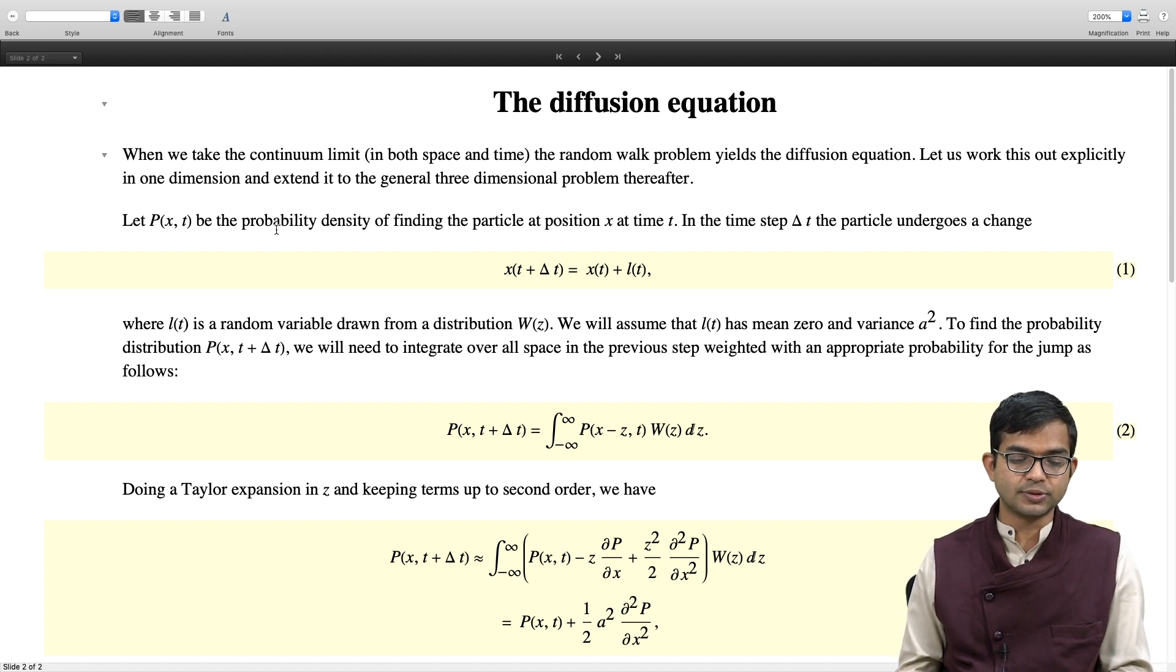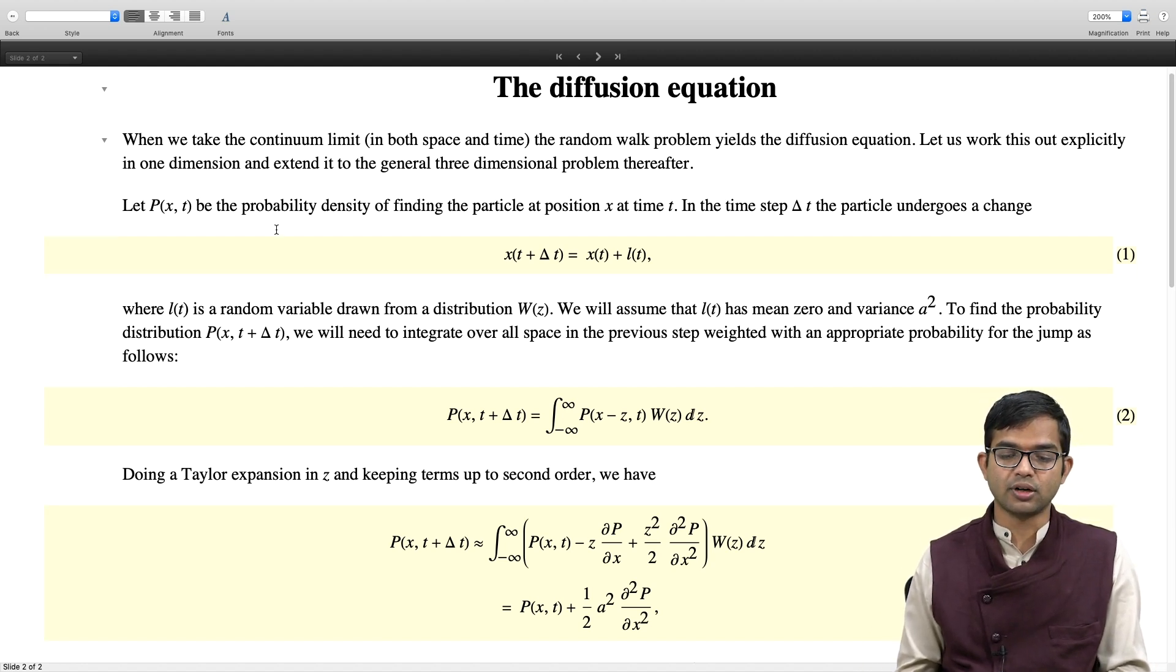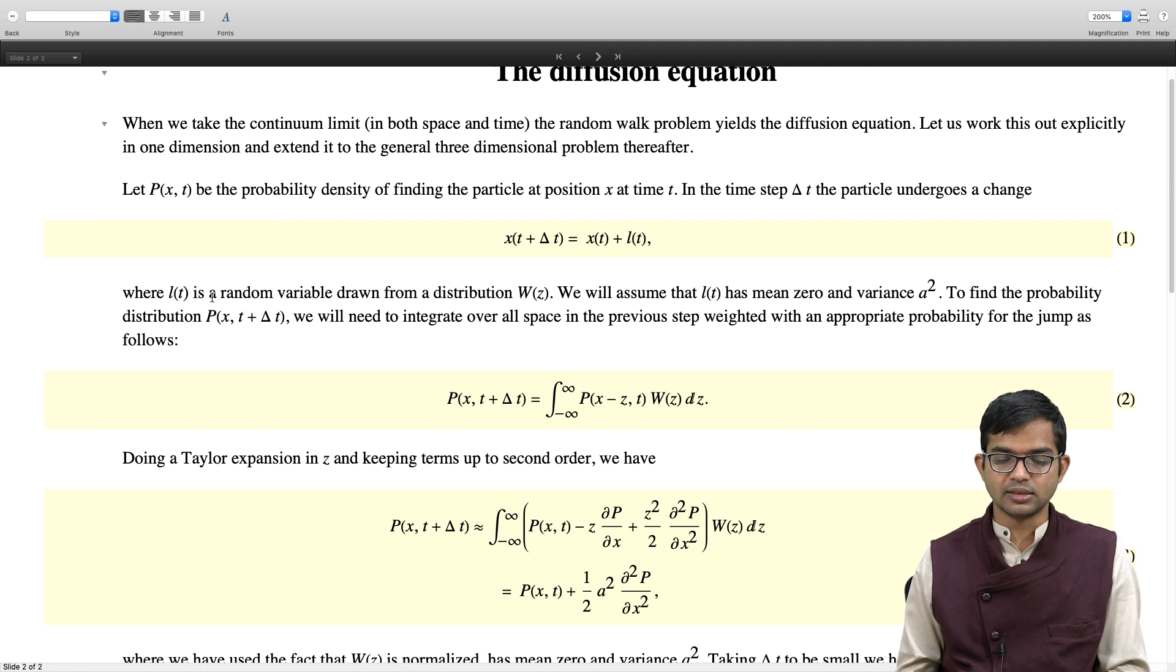Now if you do a Taylor expansion in z and keeping terms up to second order, you can write this as integral minus infinity to plus infinity P(x,t) minus z times dP/dx plus z squared by 2 times d²P/dx² W(z) dz. So I am just doing a Taylor expansion and keeping terms up to second order.